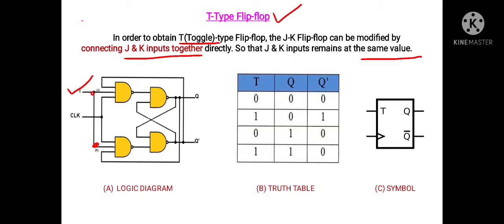As shown in the truth table, only the second and third rows are applicable for the T-type flip-flop. When the value of T equals one, we get output Q as zero and Q-bar as one — the complemented value appears at output. Similarly, when T equals zero, the complemented value, which is one, appears at output. This T-type flip-flop changes state at the output with each clock pulse, and that is why it acts as a toggle switch, and hence is named the toggle-type or T-type flip-flop.